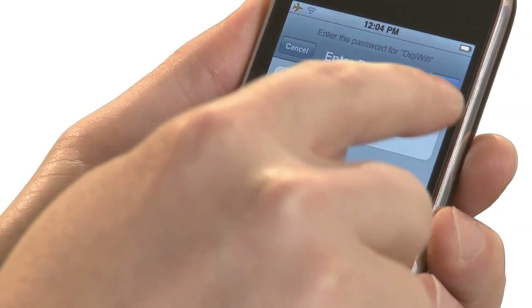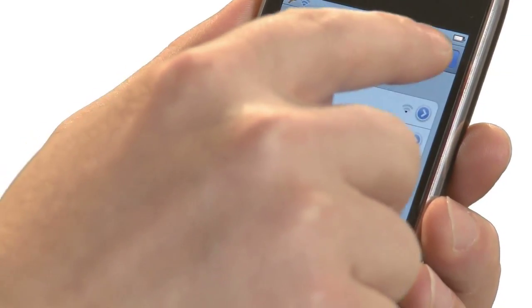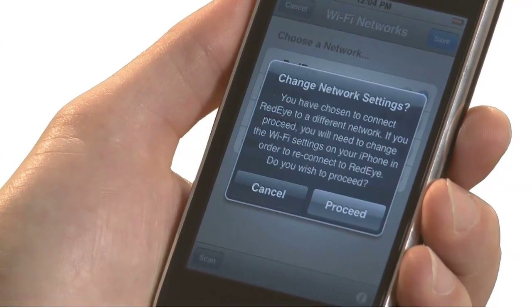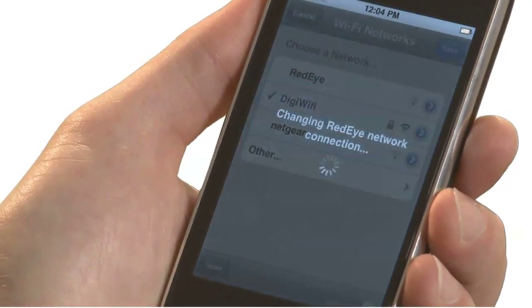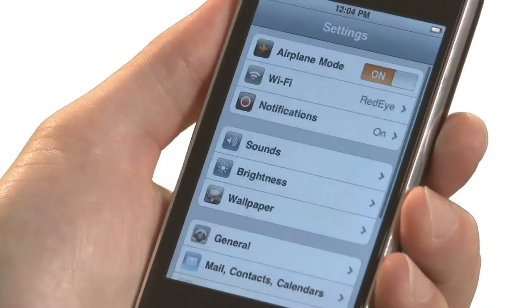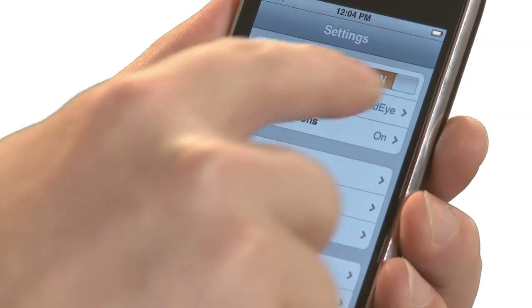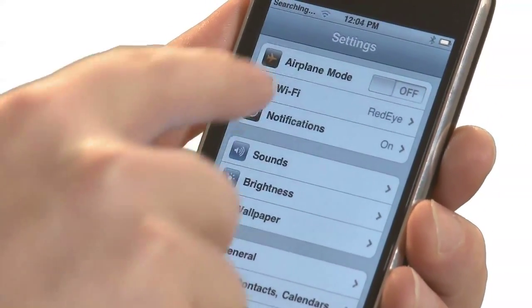The RedEye app will remind you that in order to connect to the RedEye again, you will need to change your iPhone's network settings, so let's do that now. Exit the RedEye app, open Settings, turn off Airplane mode, and choose your home network.